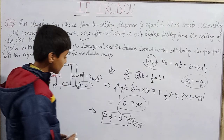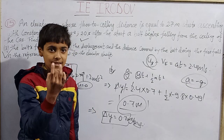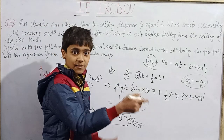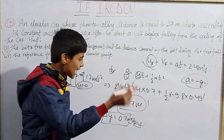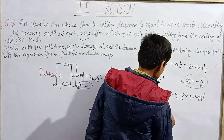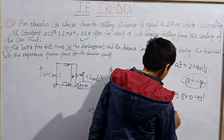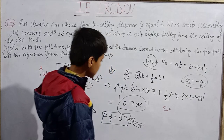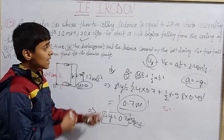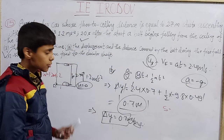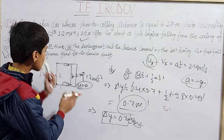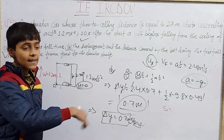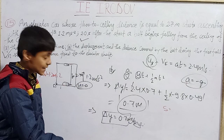Displacement was 0.7 meters — that was straightforward. Now for the distance covered by the bolt, since distance is a scalar, we need to account for the fact that the bolt first moves upward and then downward.